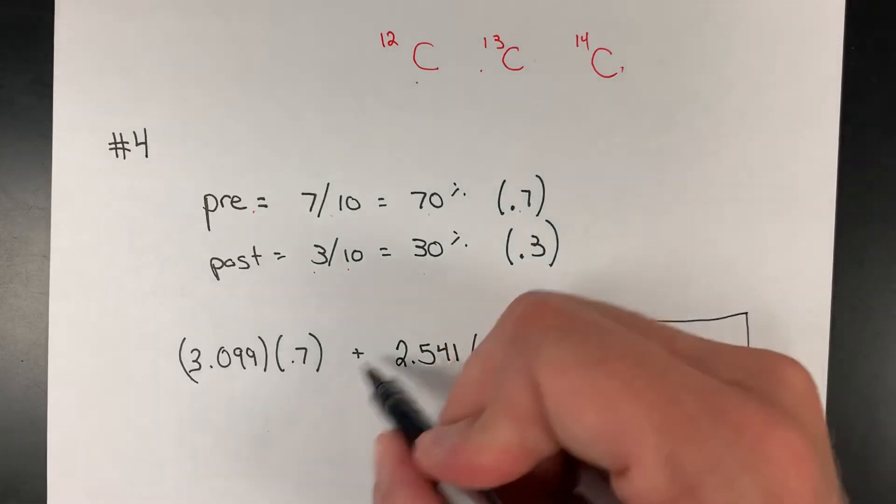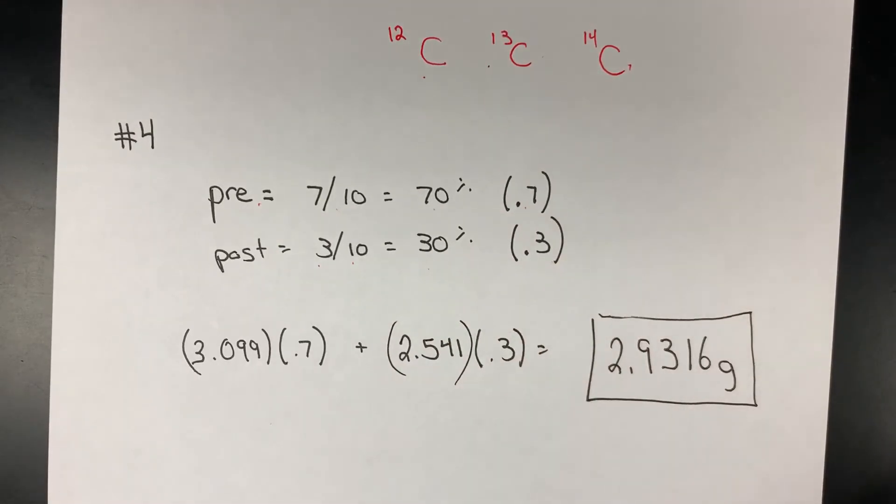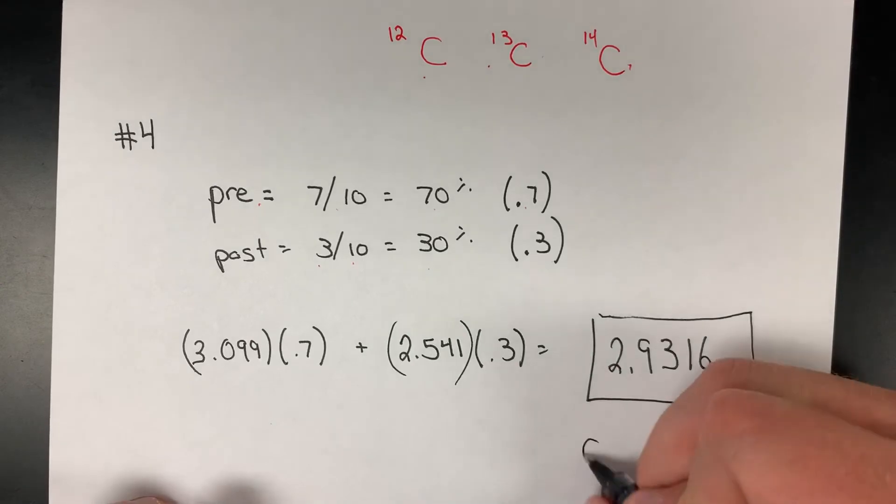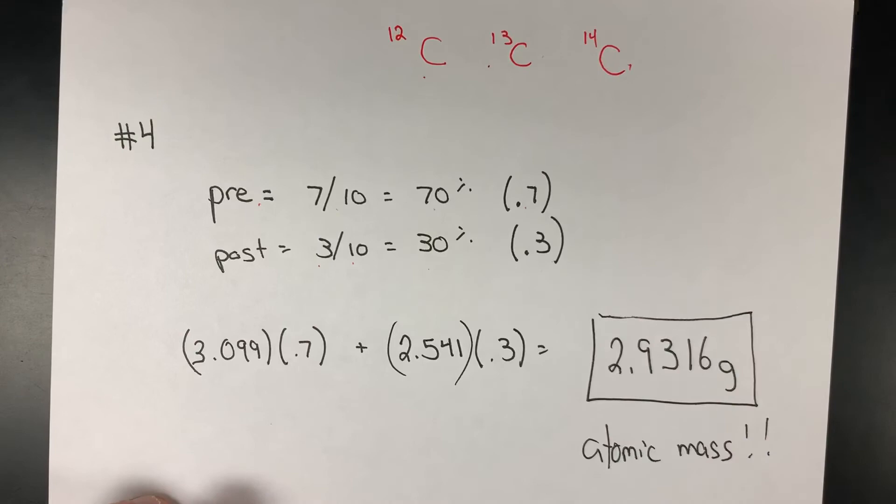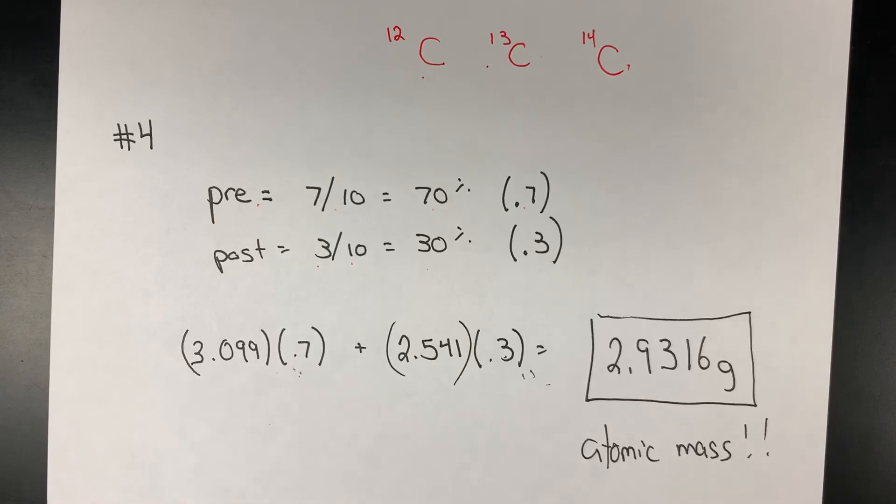Now this essentially becomes plug and chug. We are being asked to solve for the overall atomic mass for a penny—that weighted average taking into account the relative abundances of these.